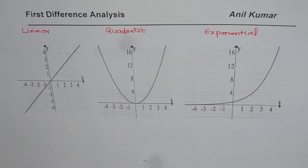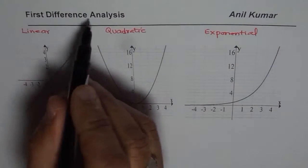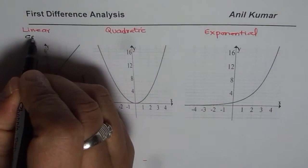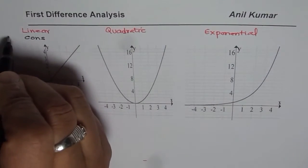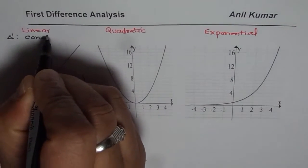So these are three different graphs and what do we expect? We expect that for the first graph, first difference should be constant. So for the first graph we expect first difference, we are talking about first difference, that will be constant.